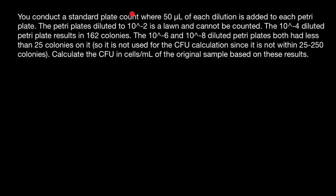You conduct a standard plate count where 50 microliters of each dilution is added to each petri plate. The petri plates diluted to 10 power minus 2 is a lawn and cannot be counted. The 10 power minus 4 diluted petri plate results in 162 colonies. The 10 power minus 6 and 10 power minus 8 diluted petri plates both had less than 25 colonies on it, so it is not used for the CFU calculations since it is not within 25 to 250 colonies range. Calculate CFU in cells per milliliter of the original sample based on these results.